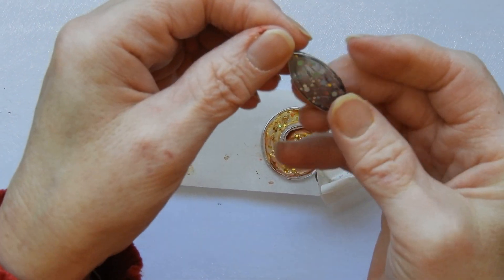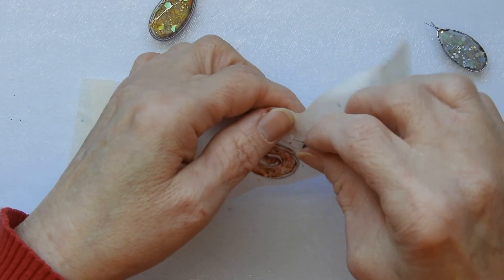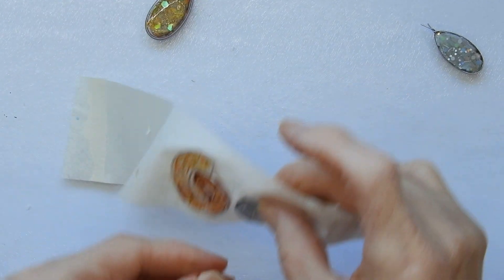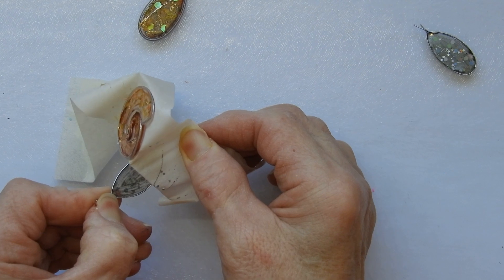Because those are earrings, I probably would put resin on the back, but again, no problem. Just go over it with a little resin and cure it again.